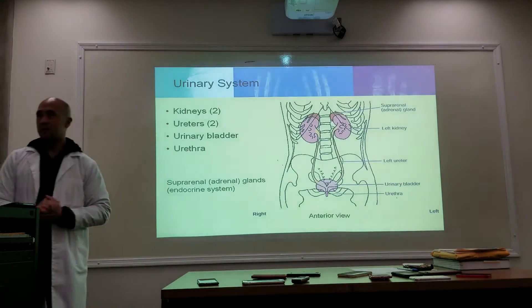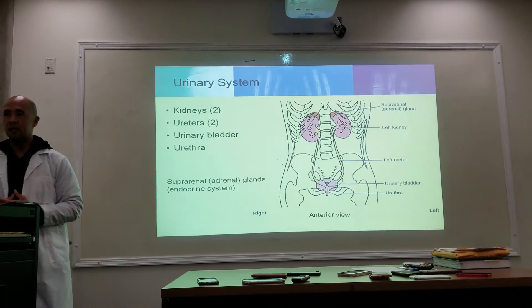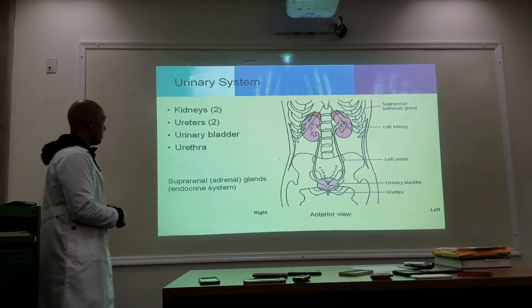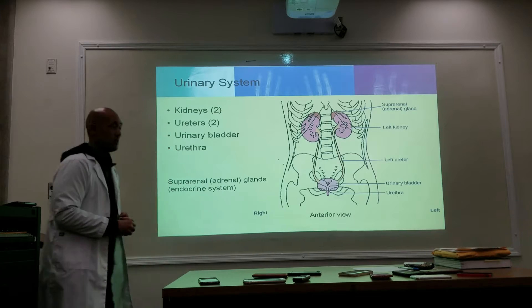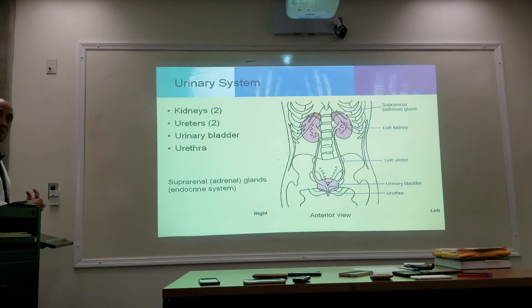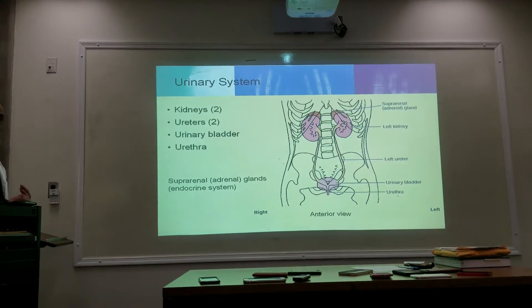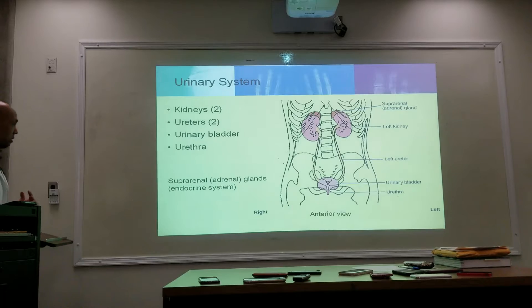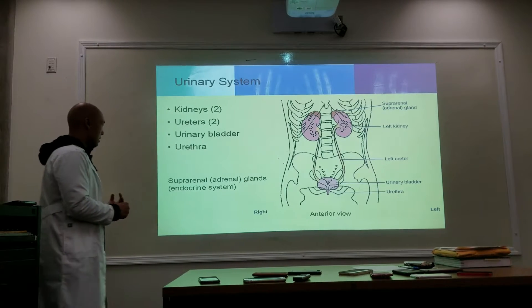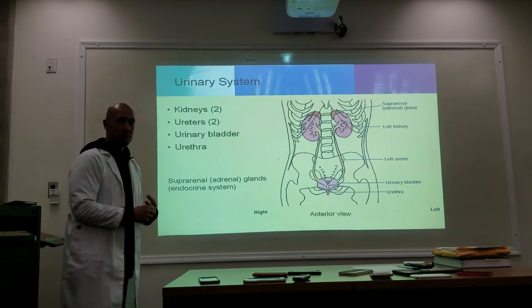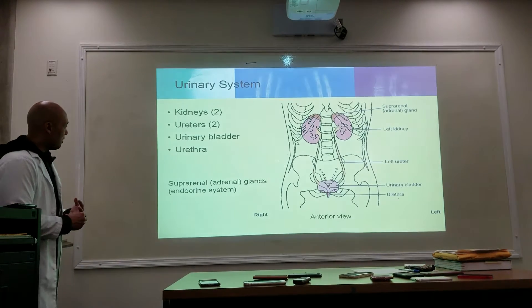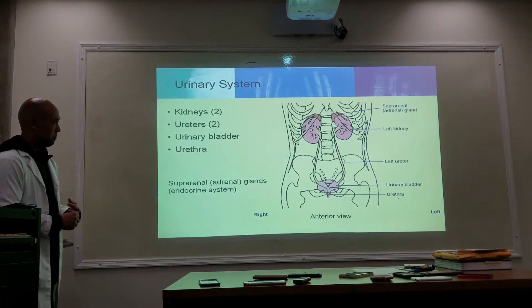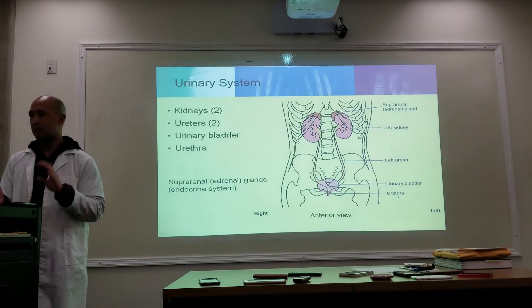The urinary system consists of two kidneys, two ureters, one bladder, and one urethra. The adrenal glands, or the suprarenals, are part of the endocrine system — they are not part of the urinary system. It's completely different.